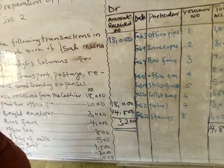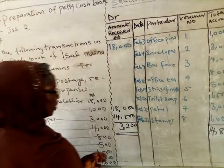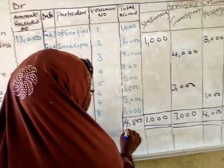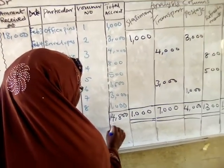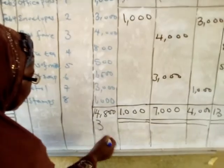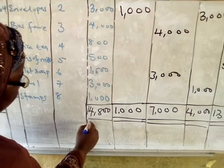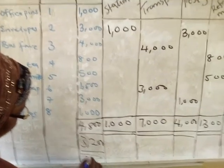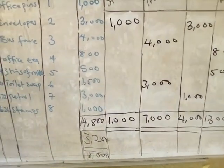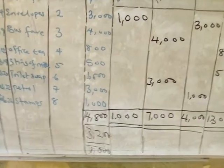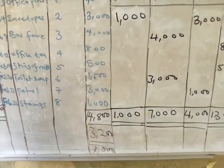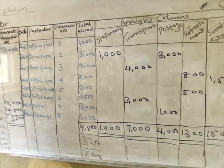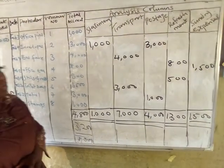This is how to prepare a Petty Cash Book — it is very easy once you know how to transfer your items to the correct analysis columns. The total spent and the balance remaining must reconcile back to the original float. Thank you very much and see you again in our next class.